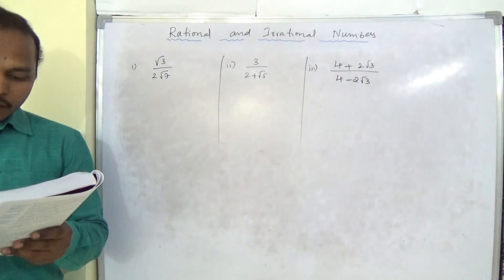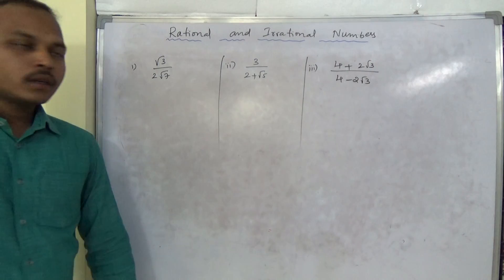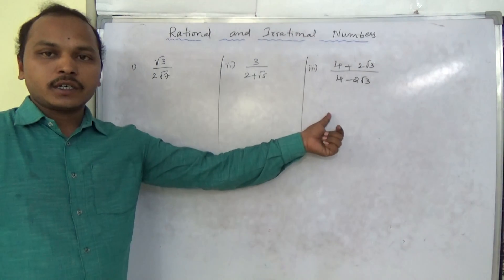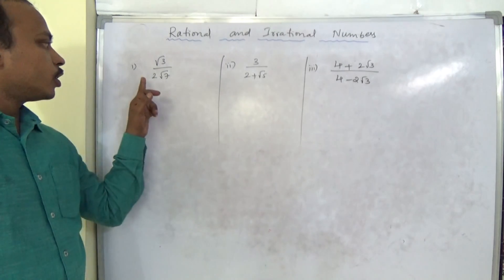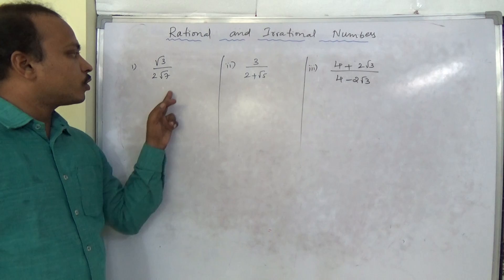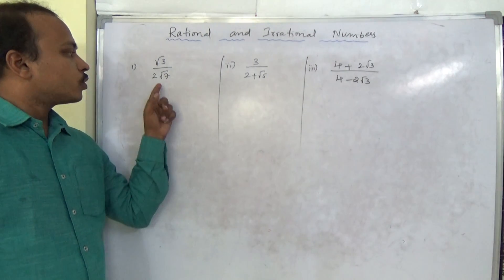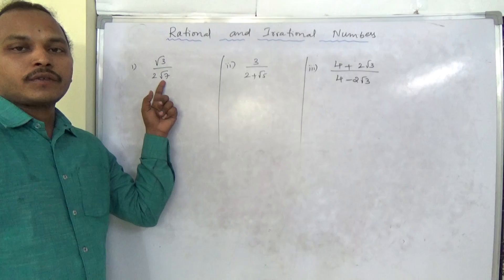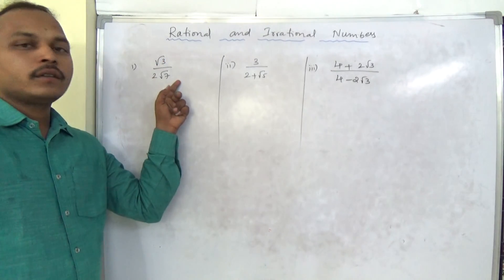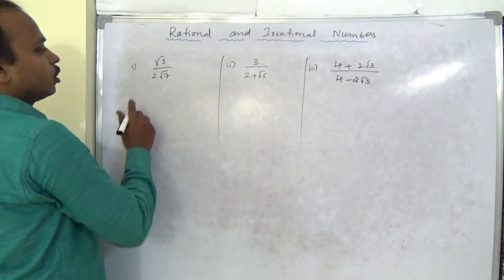Rationalize the denominator of each of the following. Only the denominator should be made rational. Here the denominator is 2√7. 2√7 is an irrational number, and the irrational part is specifically √7. With the same √7, multiply and divide the numerator and denominator — it becomes a rational denominator.